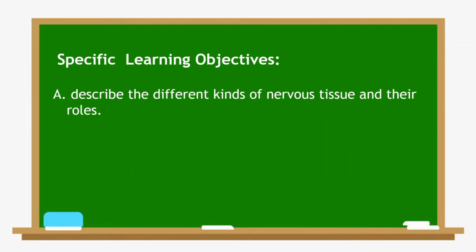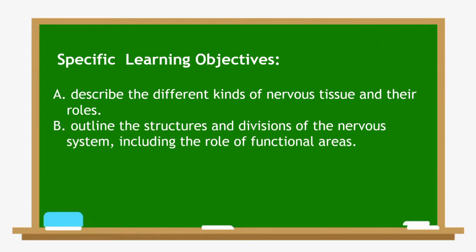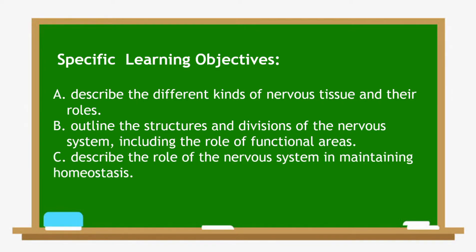Our specific learning objectives. Number one, describe the different kinds of nervous tissue and their roles. Number two, outline the structures and divisions of the nervous system, including the role of functional areas. And number three, describe the role of the nervous system in maintaining homeostasis.